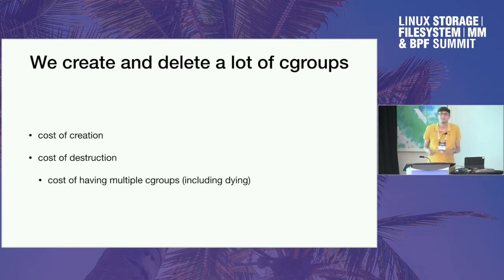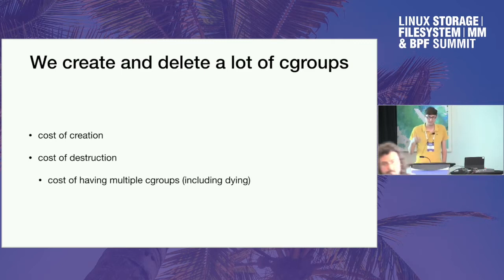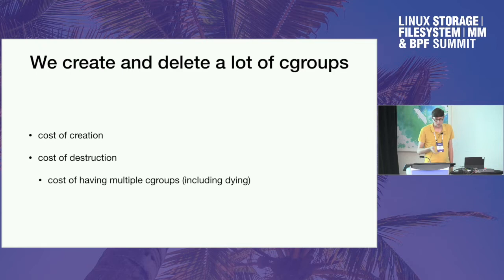It's not a secret that on any modern system we create and destroy a ton of cgroups. In particular, systemd likes to do it very often — you run something, it crashes ten minutes later, the system deletes the old cgroup and creates a new one, and it can be repeated over and over. There are some costs to creating and destroying kernel objects.